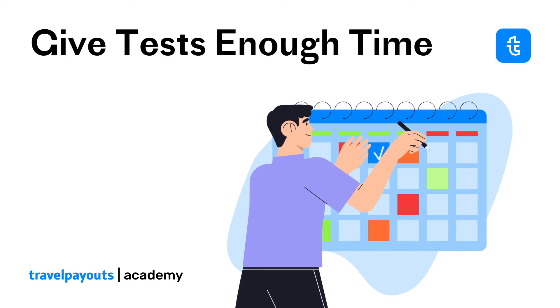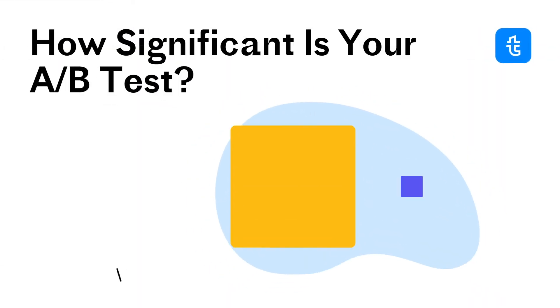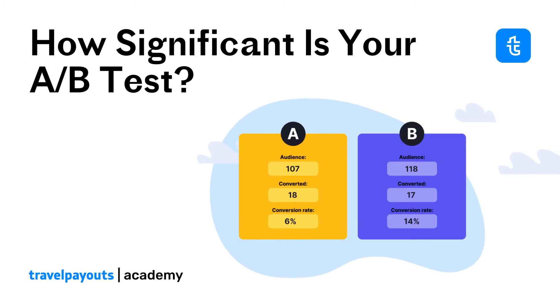To learn how long your A-B test should run, use free test duration calculators from VWO or Unbounce. To check if your test results are statistically significant for making informed decisions, use a free statistical significance calculator.